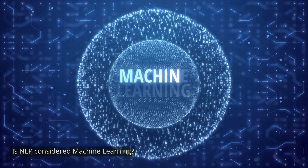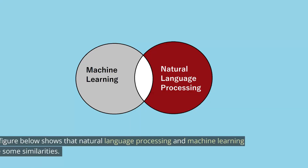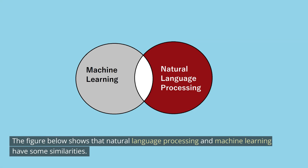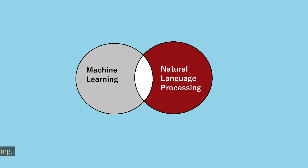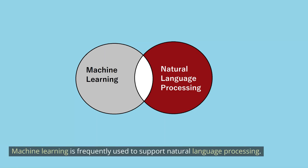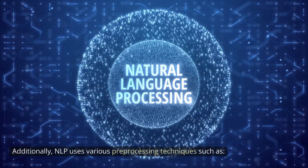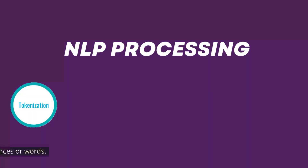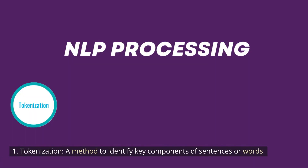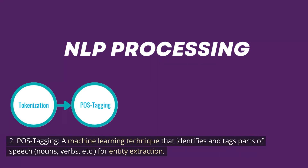Is NLP considered machine learning? Natural language processing and machine learning have some similarities, and machine learning is frequently used to support NLP. NLP uses various pre-processing techniques such as: 1. Tokenization, a method to identify key components of sentences or words. 2. POS tagging, a machine learning technique that identifies and tags parts of speech.